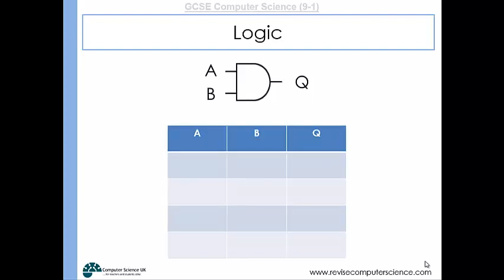For an AND gate there are two inputs, so we have more possible combinations. We could have both inputs being one — output would be one. A is one and B is zero — output would be zero. A is zero and B is one — output is zero again. And both inputs false — the output would be false from this gate in that circumstance.